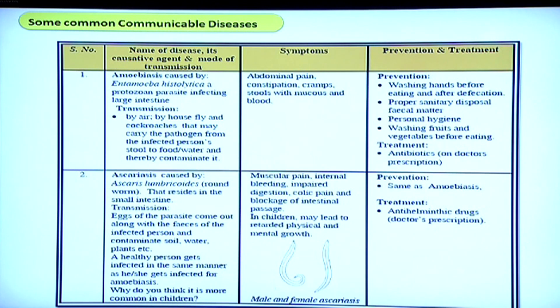Here is a list of important diseases we need to be aware of and prevent. Amoebiasis is an intestinal disease spread by a protozoan unicellular organism — an amoeba — through infected food and water. If we follow hygienic ways and drink clean water, we can be saved from these infections. Ascariasis is caused by a roundworm that can enter our body through infected food and water, causing acute pain and digestive disorders. Prevention involves safe drinking water and food treatment, and antibiotics are available.